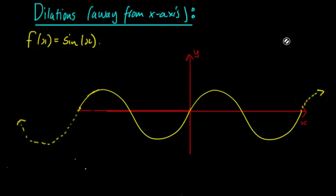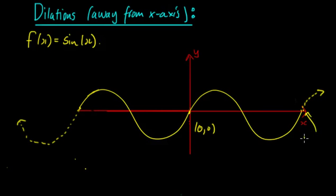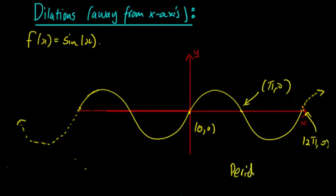Beginning with dilations away from the x-axis, we'll look at f(x) = sin(x). Here we have the standard sine x graph, and it continues in both directions. We know that the points (0, 0), (π, 0), and (2π, 0) are all on the graph. So we know that the period is equal to 2π.